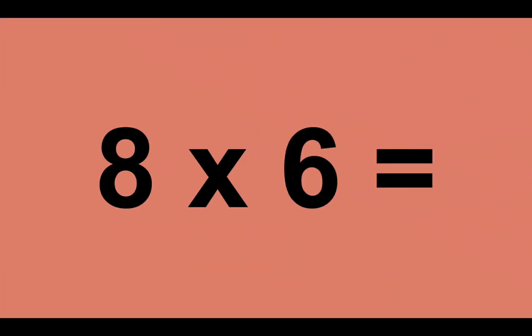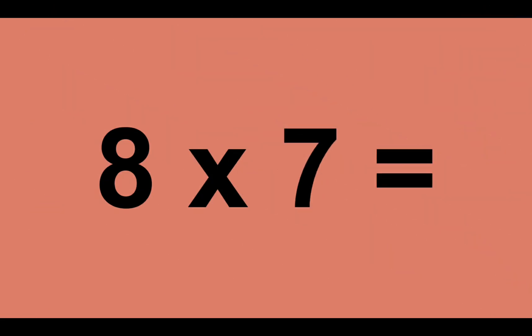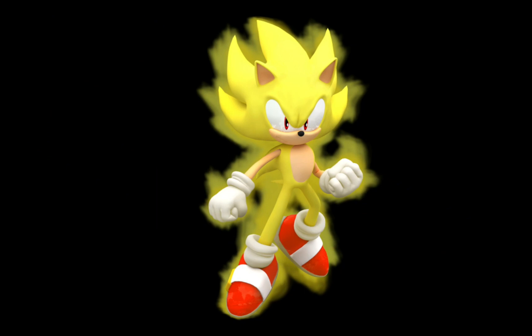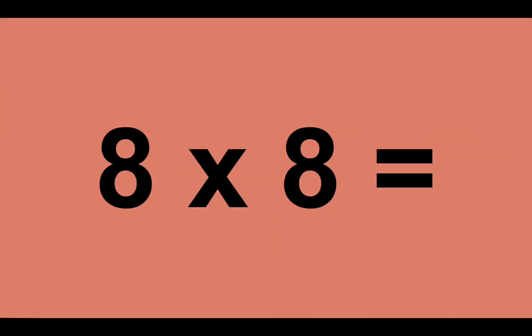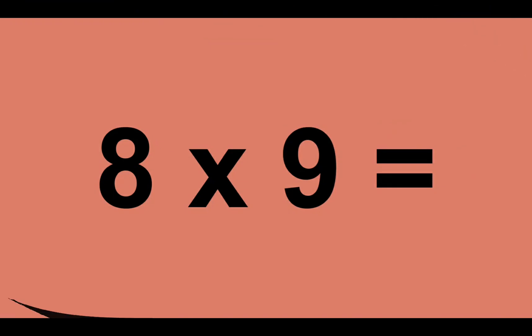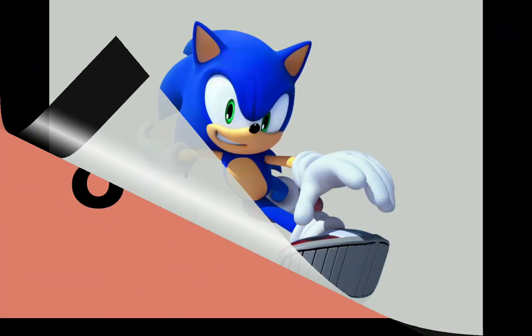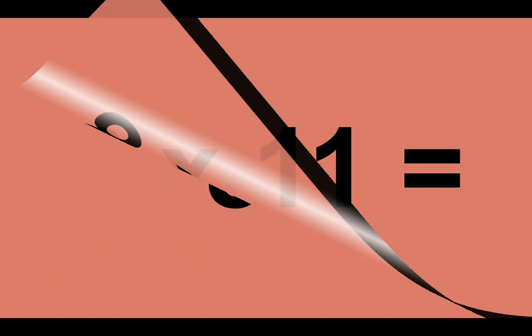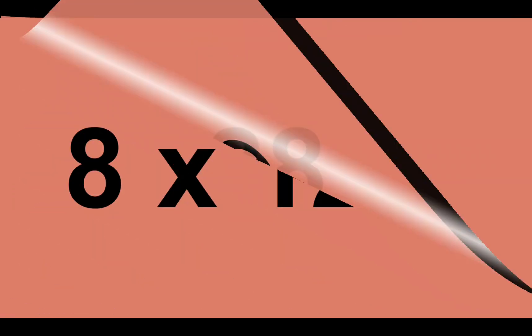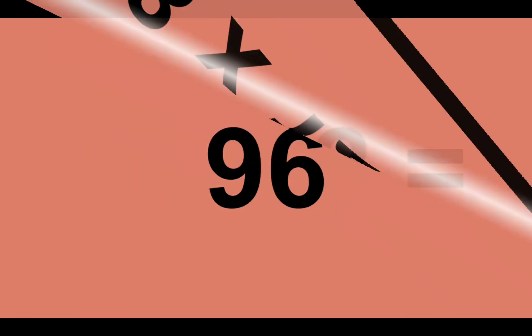Eight times six equals forty-eight. Eight times seven equals fifty-six. Eight times eight equals sixty-four. Eight times nine equals seventy-two. Eight times ten equals eighty. Eight times eleven equals eighty-eight. Eight times twelve equals ninety-six.